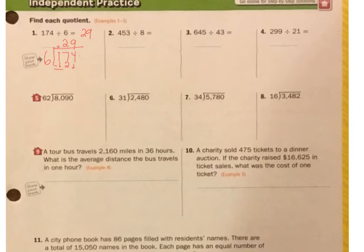Let's do number 2. 453 divided by 8. 8 does not go into 4, but it does go into 45. So 8 times 5 is 40. Subtract that, it leaves me with 5. Then I bring my 3 down. And then 8 times 6 is 48. Subtract that. And that leaves me with 5. So it's 56 remainder 5. There's your answer for that one.